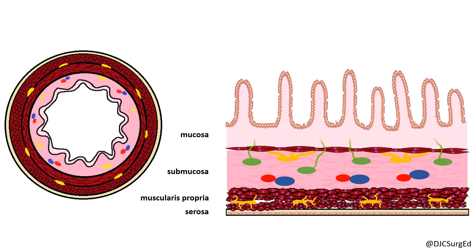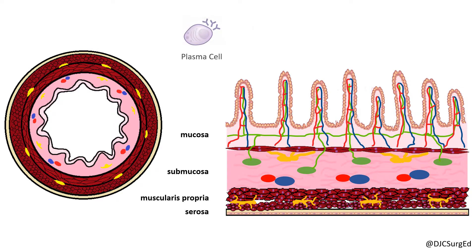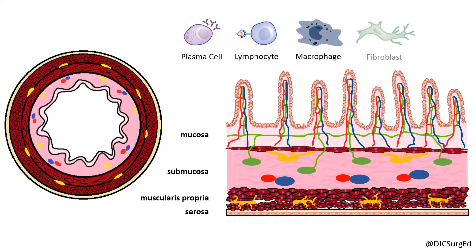The lamina propria is a connective tissue layer that contains a variety of cells, including plasma cells, lymphocytes, macrophages, fibroblasts, and smooth muscle cells.